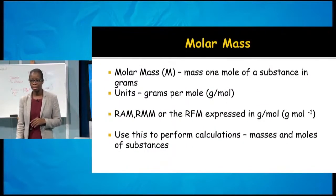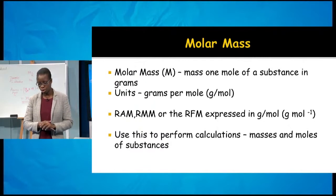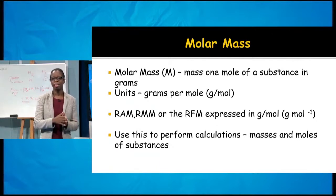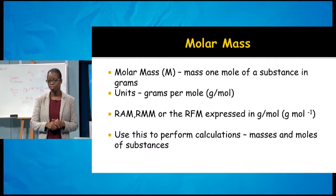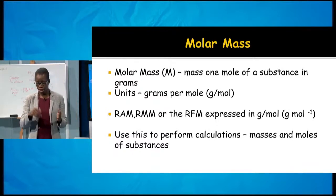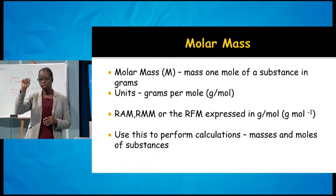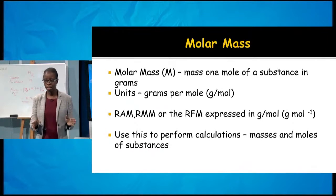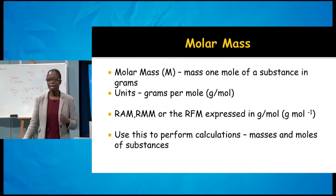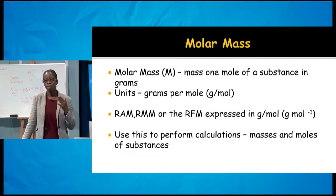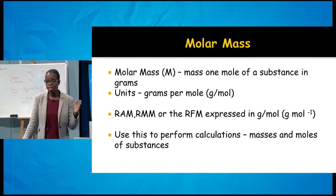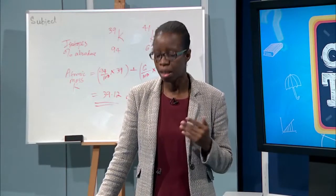Molar mass is the mass of one mole of a substance, measured in grams per mole (g/mol or g·mol⁻¹). The relative atomic mass (RAM), relative molecular mass (RMM), and relative formula mass (RFM) all have no units on their own, but when expressed in grams per mole they represent the molar mass used in calculations.